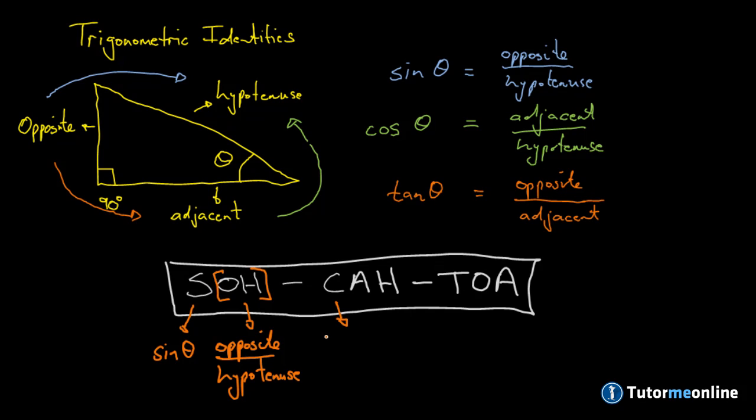Then we have the cosine of theta. And this is of course the adjacent side over the hypotenuse.